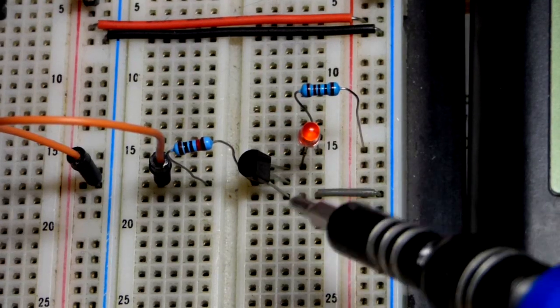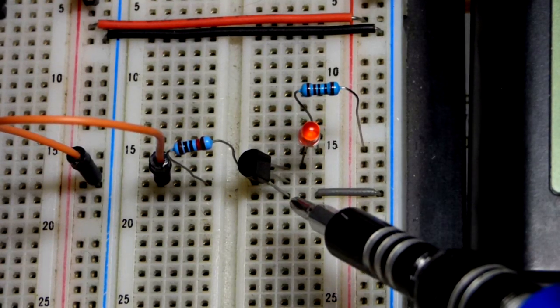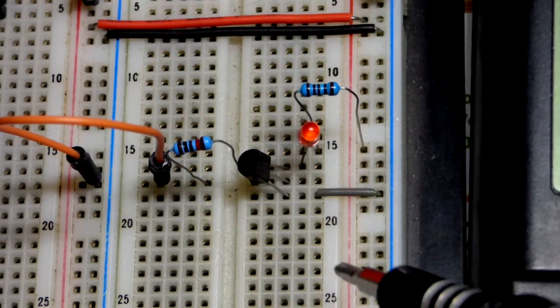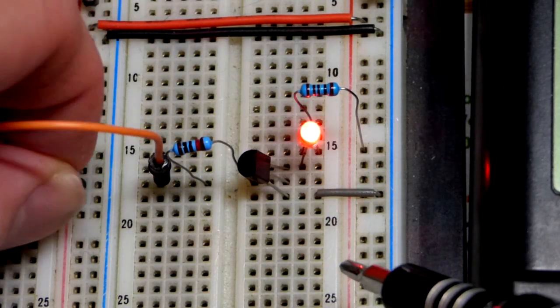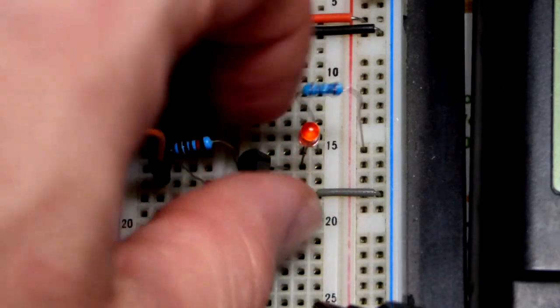So now zooming in, we have the 2N2222A right there. Emitter, base, collector, because flat side is to the right, as we already saw, it works.